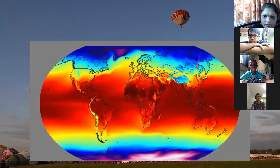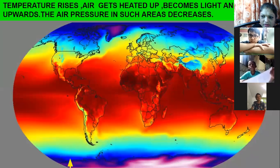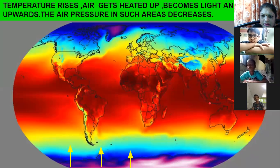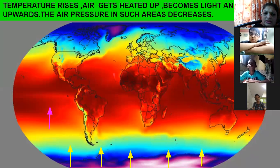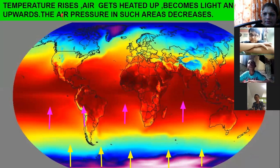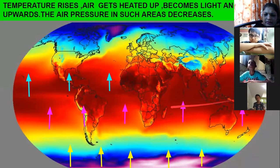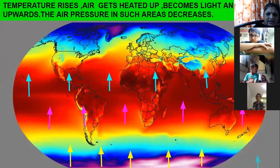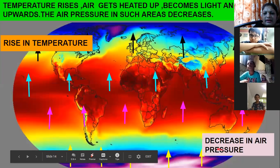Near the equator, the temperature is very high — the rays of the sun are perpendicular over here. So if the temperature is high, the air gets heated up near the equator, then it will move towards the upper direction because air has become lighter in weight. When the temperature is high, slowly the air pressure will become less — air pressure is low. So rise in temperature leads to a decrease in air pressure.